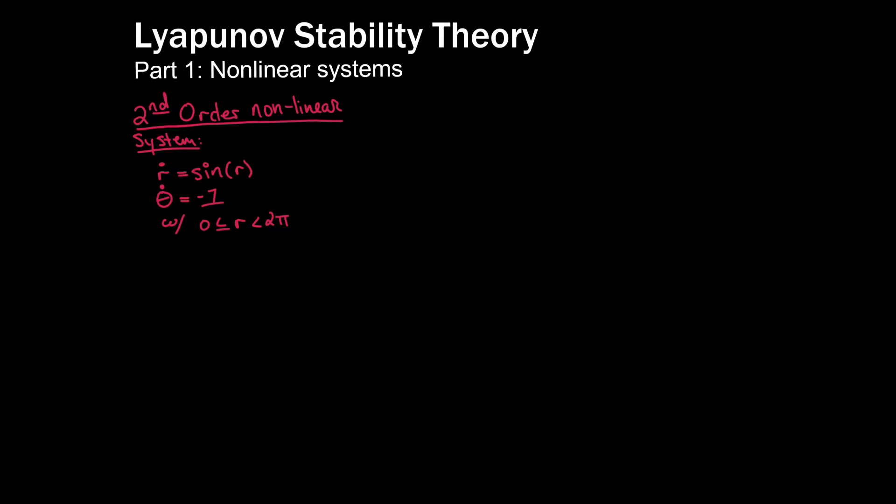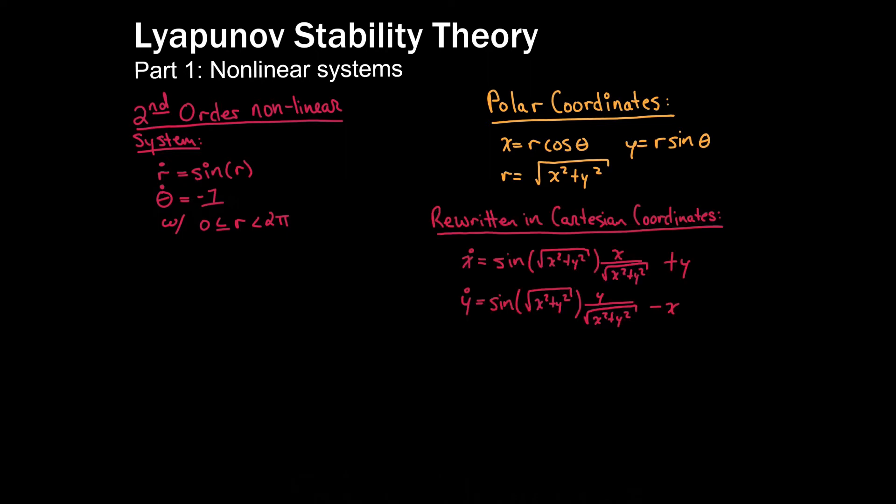Now when you see this, because we don't normally work in polar coordinates, you may try to convert it back to rectangular or Cartesian coordinates. So if you did that you would recall these equations that let us transfer back and forth. You can actually take the time derivative of x and y here and through the product rule recover a system of differential equations in the Cartesian coordinates. But this doesn't really tell us a whole lot. This is quite hard to analyze.